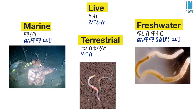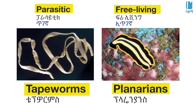Worms are found in freshwater, forests, and other terrestrial habitats, as well as in the sea. Tapeworms live as parasites, while planarians are free-living flatworms.